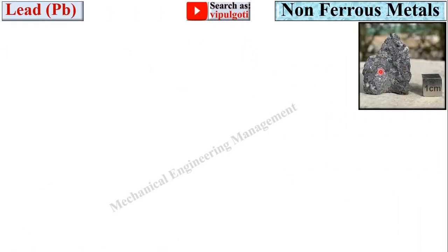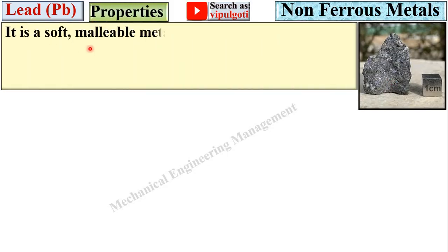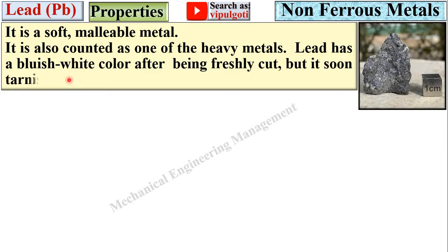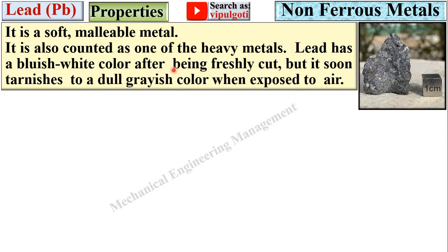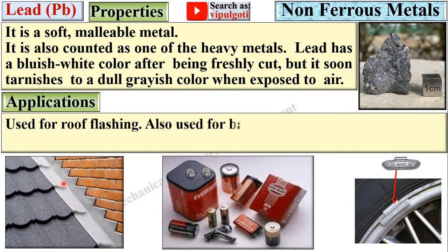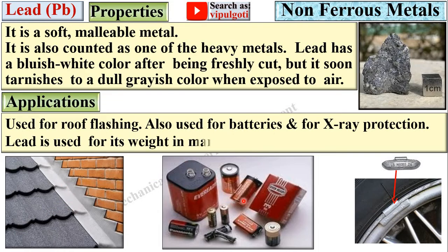Next, lead. Here you can see a specimen of lead. Lead is a soft and valuable metal and is counted as one of the heavy metals. It has a bluish-white colour when freshly cut, but it soon tarnishes to a dull grayish colour when exposed to air. Applications: used for roof flashing, batteries, and X-ray protection. Lead is also used for its weight in many ways.